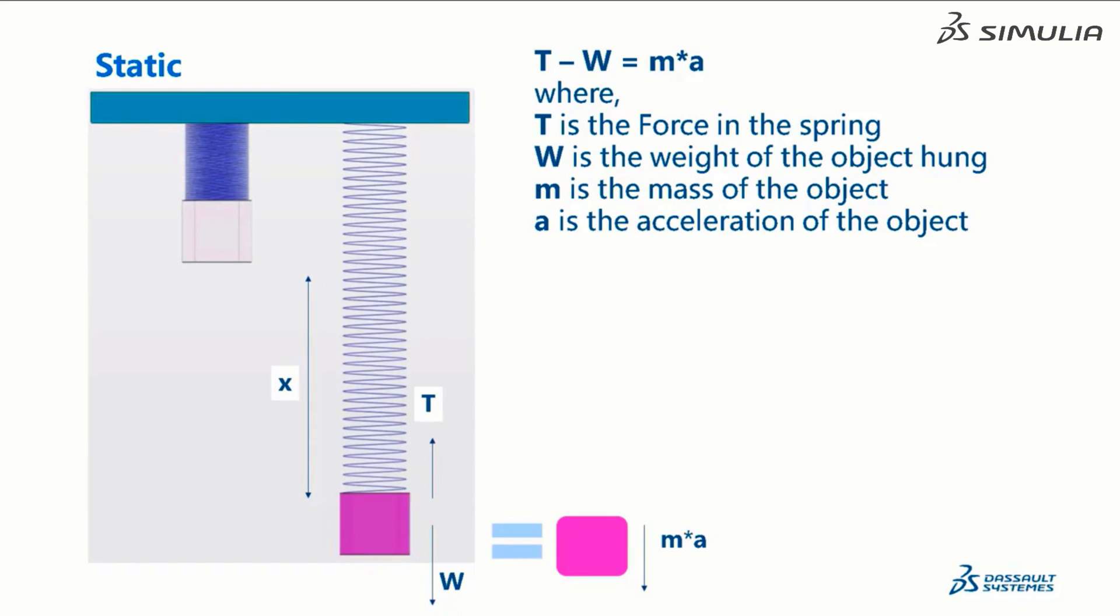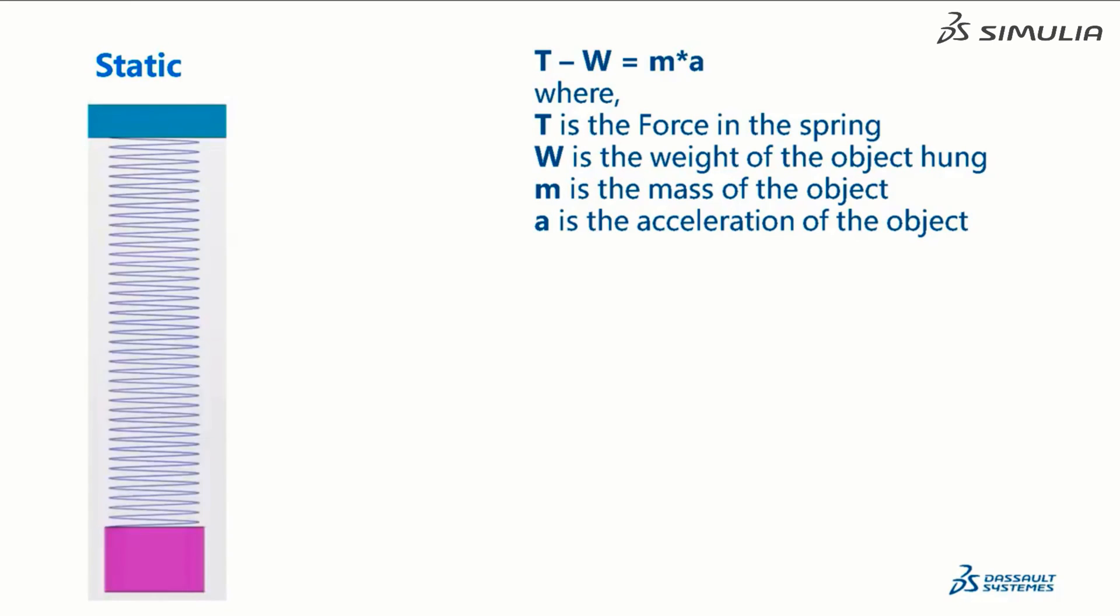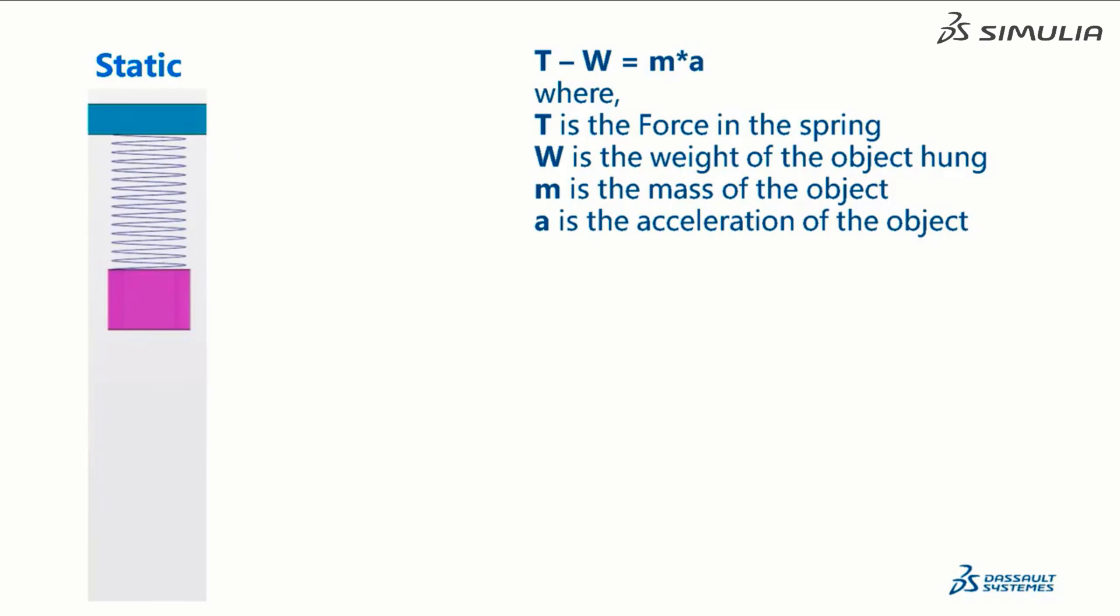We can use Newton's second law, f equals m times a, to describe how this system behaves. If we are not careful in hanging the object, it will bounce up and down. The motion and forces will follow Newton's law, will eventually stop bouncing.